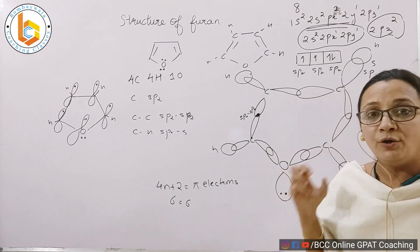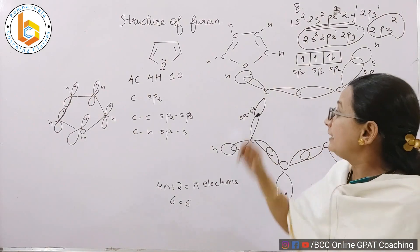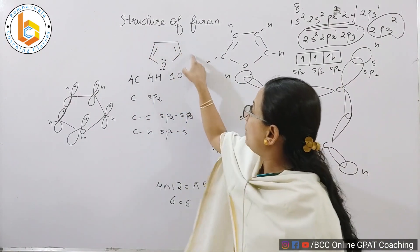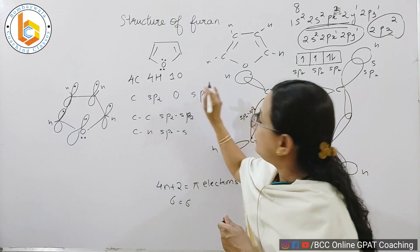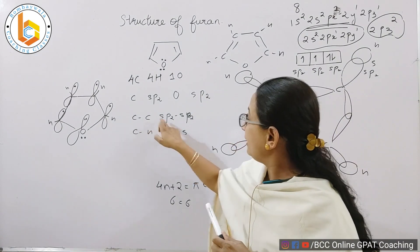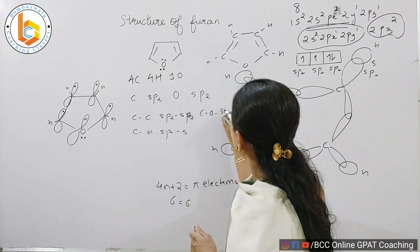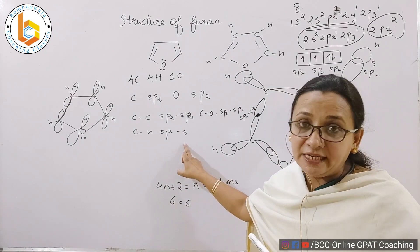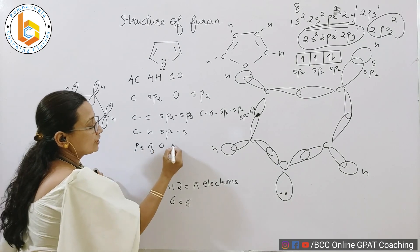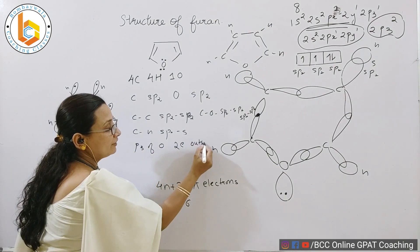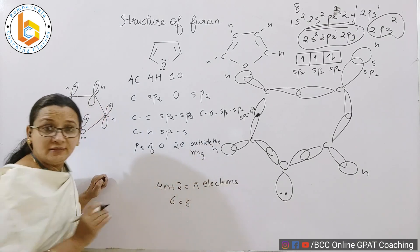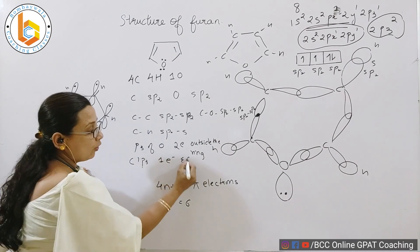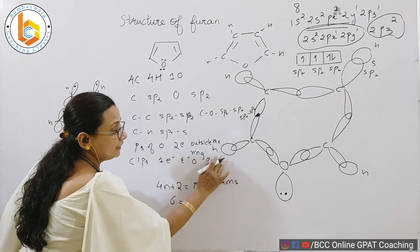Let us quickly summarize what we have discussed in the structure of furan. We said that in the structure of furan there are 4 carbons, 4 hydrogens, and 1 oxygen. All the carbons are sp2 hybridized and also the oxygen is sp2 hybridized. The carbon-carbon bond is sp2-sp2 overlap and the carbon-oxygen bond is sp2-sp2 overlap. The carbon-hydrogen bond is sp2-s overlap. There is a pz orbital of oxygen which contains two electrons and that is lying outside the ring. All the carbons have one pz orbital which contains one electron each, and oxygen contains a pz orbital containing two electrons.